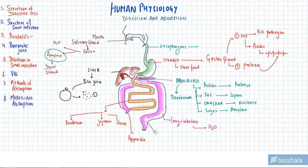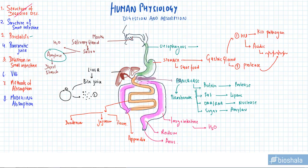Then we have the rectum, where undigested material and stool are stored temporarily. When you feel the urge to defecate, it is sent out of the body through an opening known as the anus. That was the first topic: the structure of the digestive system. Let's move on to topic number 2 — the structure of the small intestine.